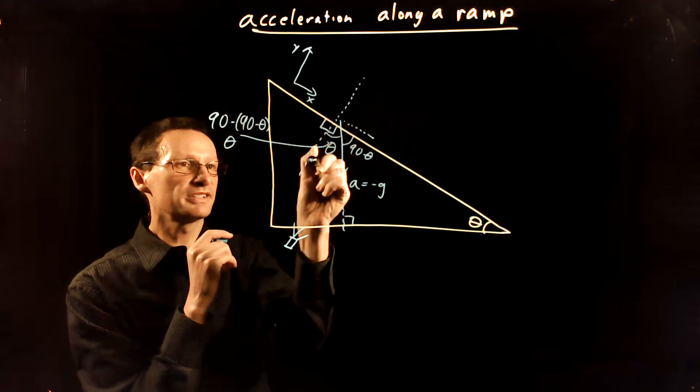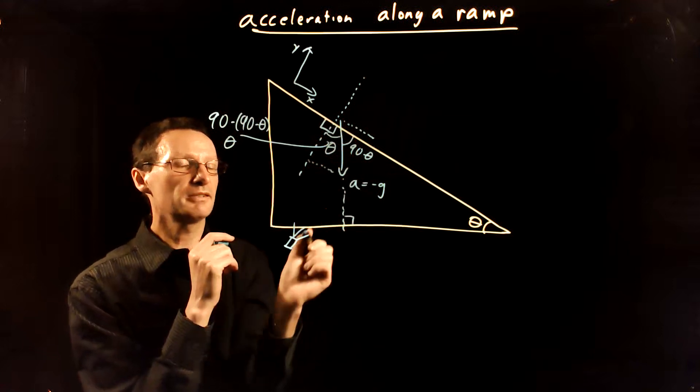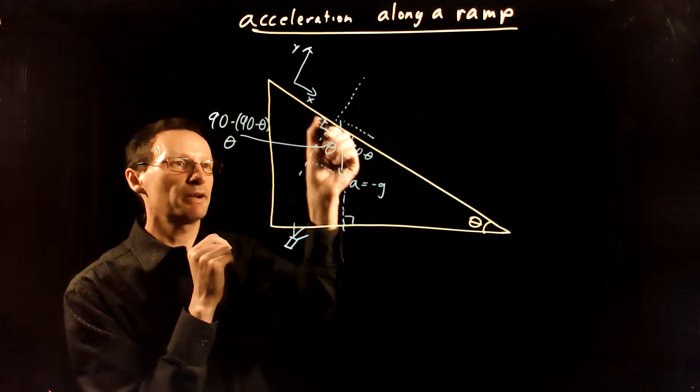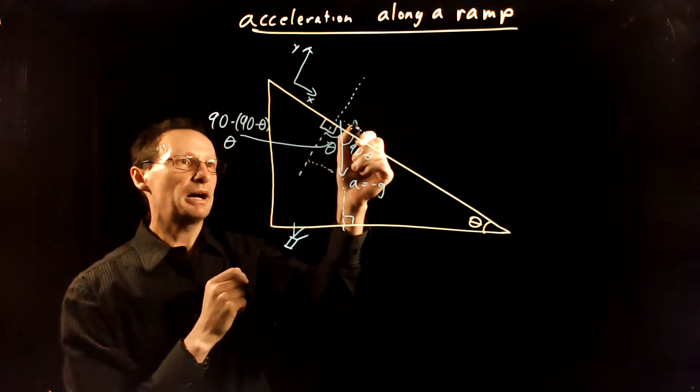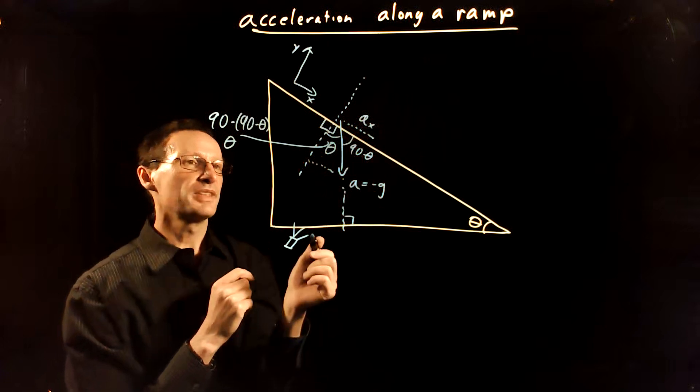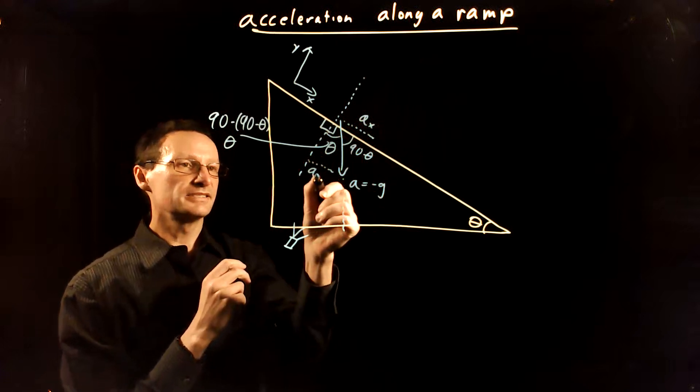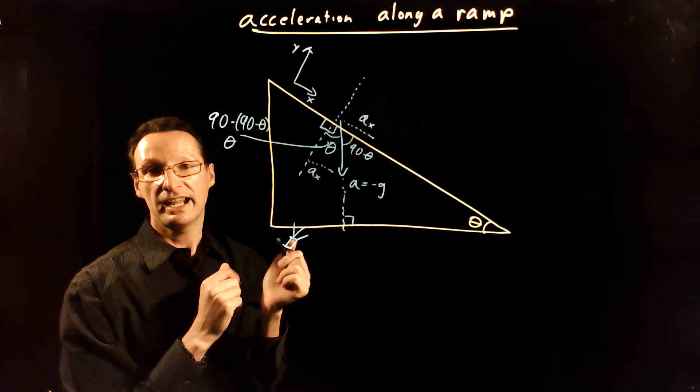I want the part of the acceleration that is parallel to the ramp. And so that's this part or this part—these two parts are the same thing. I want AX. And AX is opposite of that angle theta.